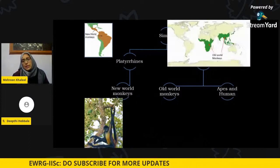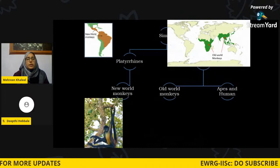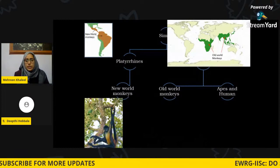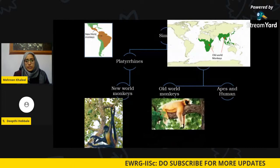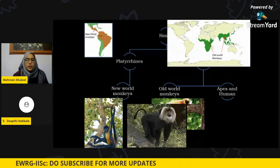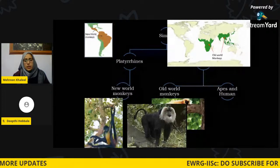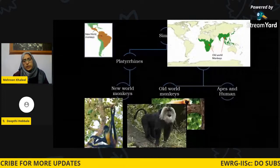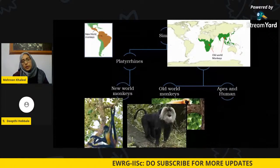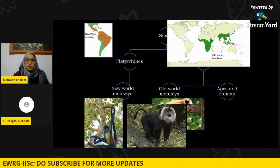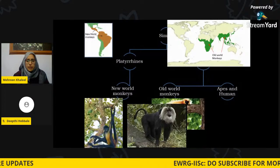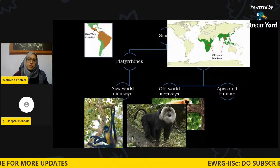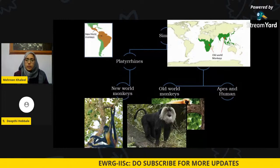Old World monkeys, as their name suggests, are found in the old world parts of Africa and Asia. These include langurs and baboons. For example, the golden langur, which is found in India, and the lion-tailed macaque, an endemic and endangered macaque of the Western Ghats. Old World monkeys don't have a prehensile tail and are mostly leaf-eating monkeys. Apes and humans are put in a separate sub-family of catarrhines.